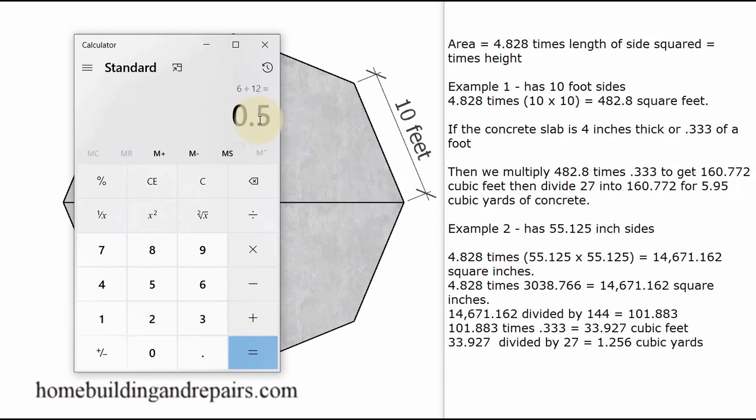We can take and reenter our number 482.8, and then we are going to multiply that times 0.33 to get 160.772, which is the cubic feet of our concrete slab. So if I was going to be using a 60 pound bag of concrete that supposedly represents 1 cubic foot of concrete, then I would need 161 bags.